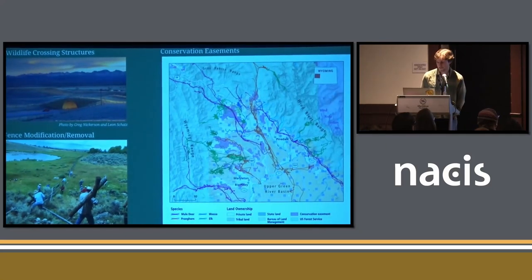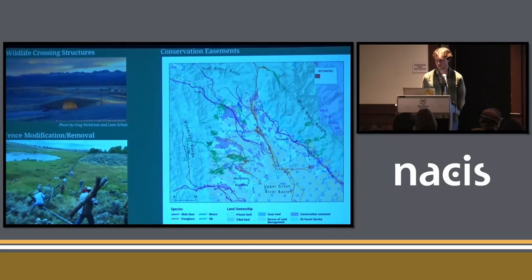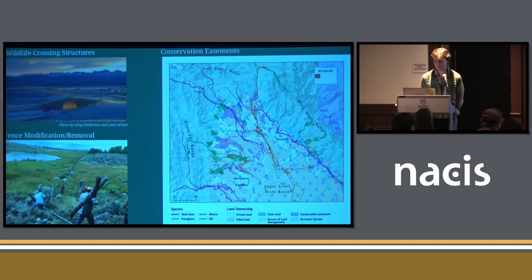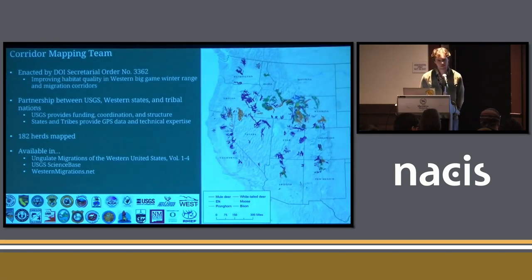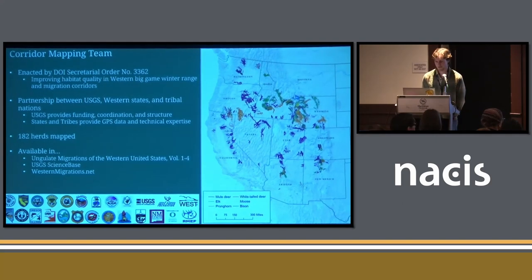The creation of these well-designed and detailed maps is great to showcase migrations and the threats to migrations, and has helped inform things like the placement of wildlife crossing structures, educated fence modification and removal in migration routes, and where to prioritize future conservation easements on private lands. Much of this foundational work was done in Wyoming but has since expanded far beyond, to the rest of the Western United States, with the Department of Interior Secretarial Order that called to improve habitat quality in western big game winter range and migration corridors.